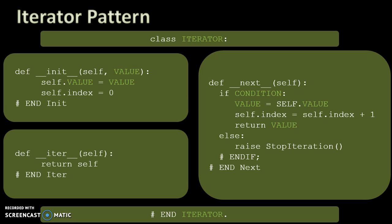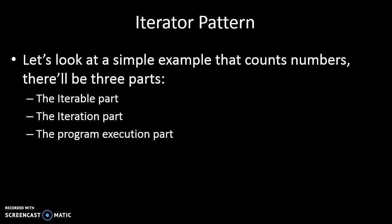The code in green will vary between different programs, but in general the white code is the shape of the pattern. If we look at a simple example that just counts numbers starting at zero, we'll have three parts: the iterable part, the iterator part, and the code to execute it.